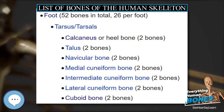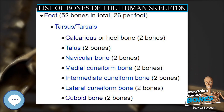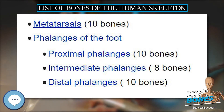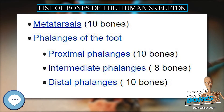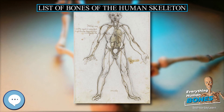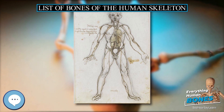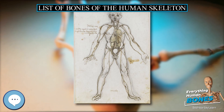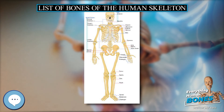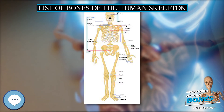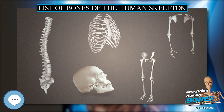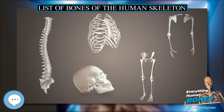Head. There are 22 bones in the skull. Including the bones of the middle ear, the head contains 28 bones. Arm. There are a total of 64 bones in the arm. The pelvis, or pelvic girdle, also called the hip bone, is made up of three regions that have fused to form two coxal bones: the ilium, ischium, and pubis. Leg. There are a total of 60 bones in the legs.